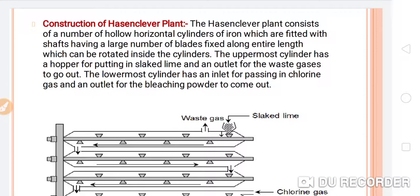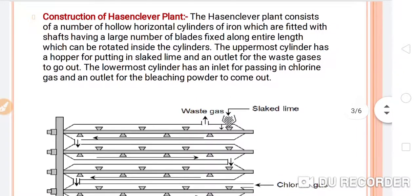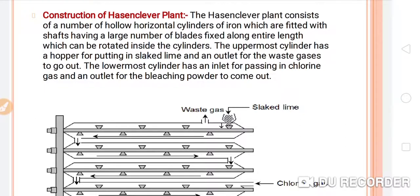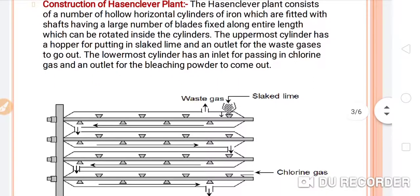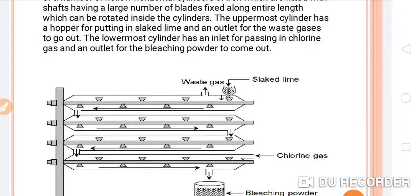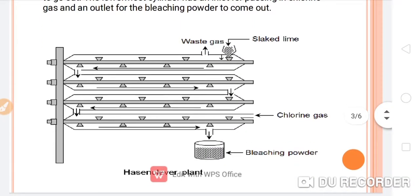Construction of the Hazen Clover plant: it consists of a number of hollow horizontal cylinders of iron fitted with shafts having a large number of blades along their entire length, which can be rotated inside the cylinders. The uppermost cylinder has a hopper for putting in slaked lime and an outlet for waste gases. The lowermost cylinder has an inlet for passing in chlorine gas and an outlet for the bleaching powder to come out.